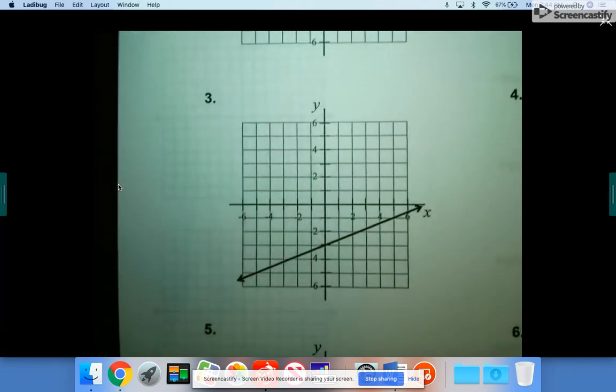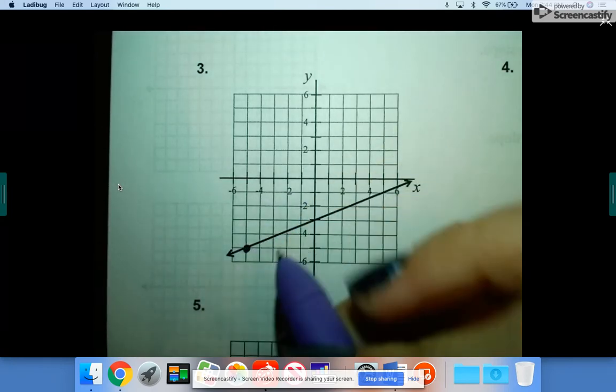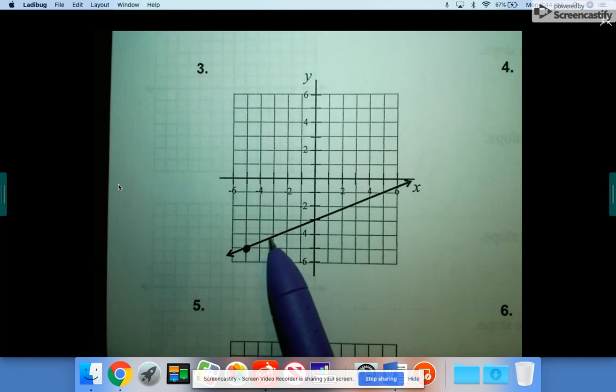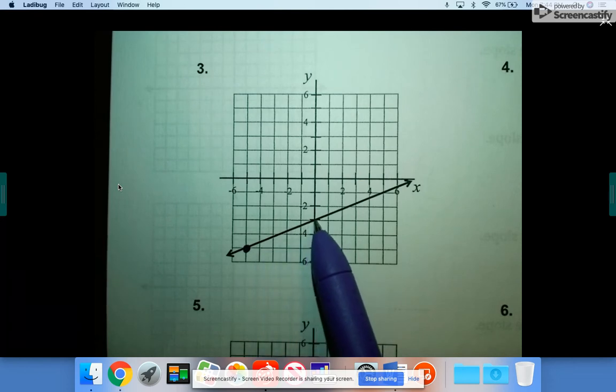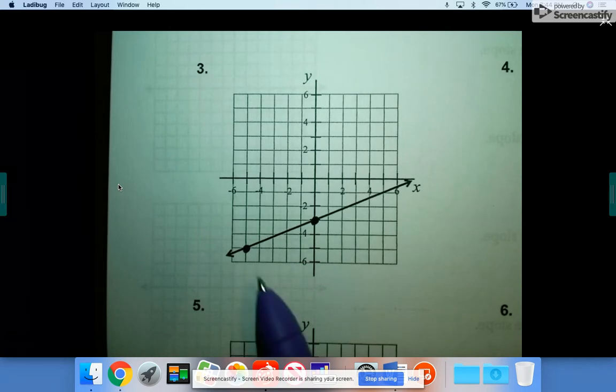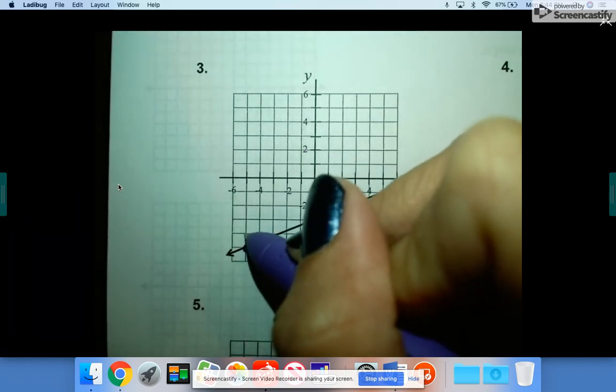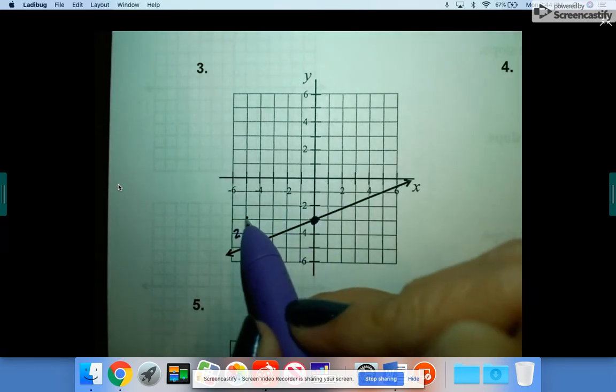All right, number three. First, you have to pick two points. So I'm going to go along here. I see one right here that intersects at an exact corner. And then I'm going to keep going. I don't see any. I don't see any. There's one. Okay. And it's going uphill from left to right, so it's positive. And it goes up one, two, and over one, two, three, four, five.